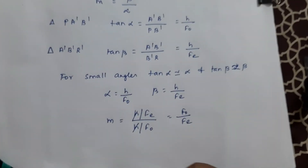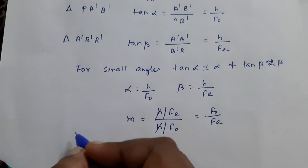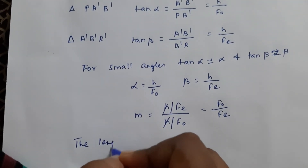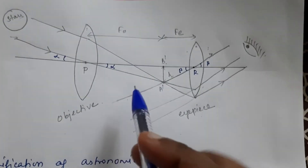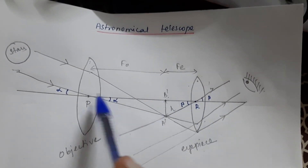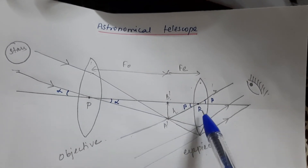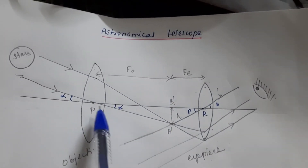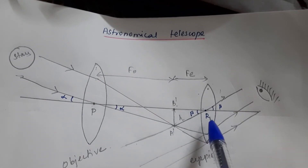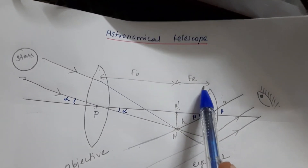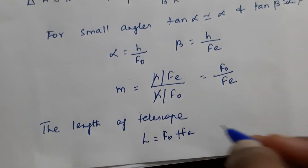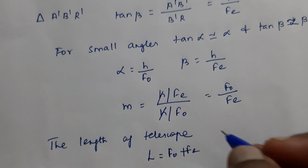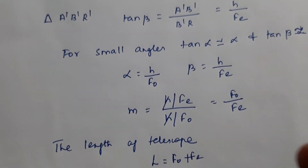Now, what is the length of the telescope? The length of the telescope is the distance between the two optical centres of the objective and the eyepiece, which equals F_O plus F_E. So the length of the telescope is L = F_O + F_E. This is how we find the magnification of the astronomical telescope.